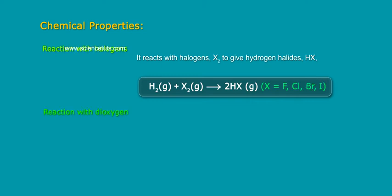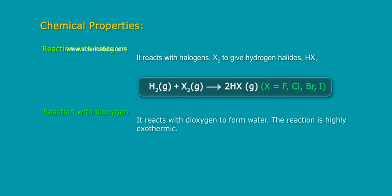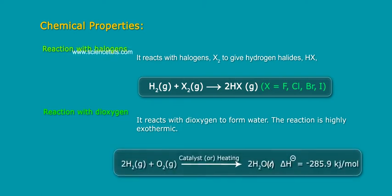Reaction with dioxygen. It reacts with dioxygen to form water. The reaction is highly exothermic. 2H2 gas plus O2 in gas yields 2H2O liquid. Delta H equals minus 285.9 kilojoules per mole.